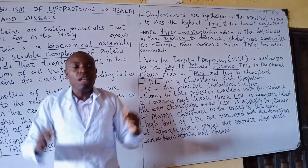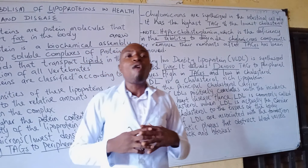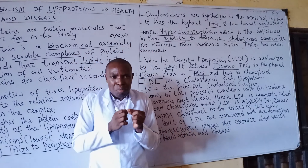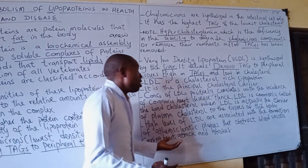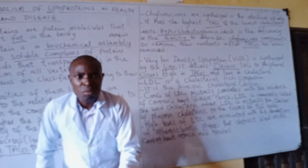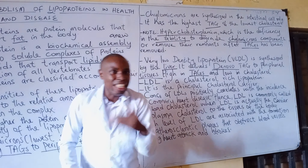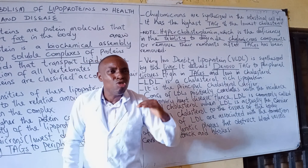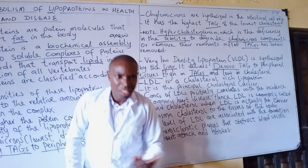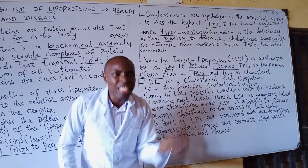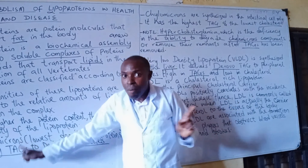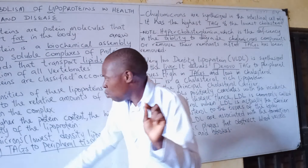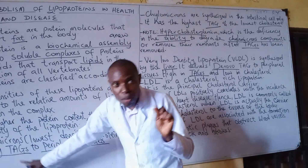Students often have issues understanding these points. For knowledge purposes, de novo simply means 'anew' — getting something from another fresh source, from the beginning. The function of VLDL is similar to that of chylomicrons, but chylomicrons deliver dietary TAG whereas VLDL delivers de novo TAG.